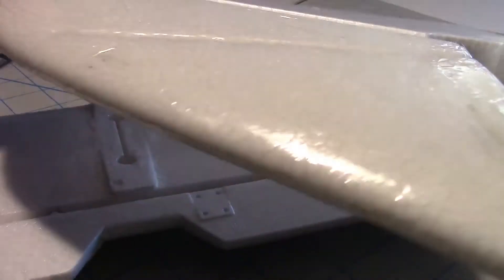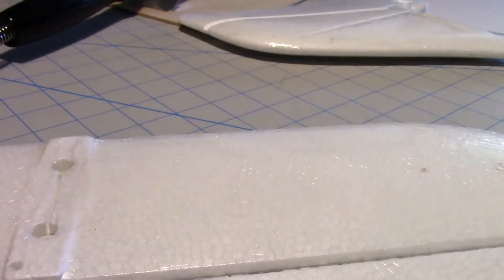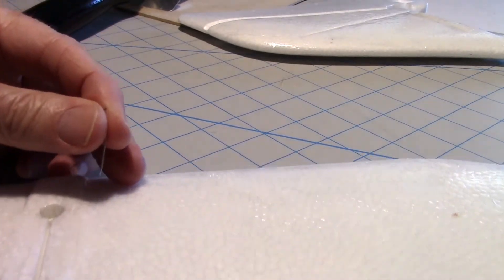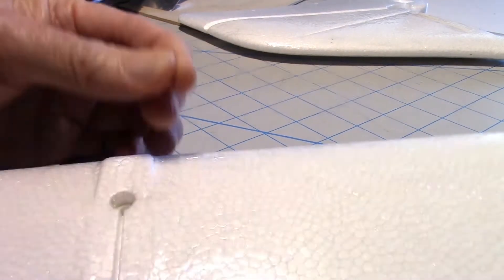Now I got the vertical stabilizer done as well. A little tip here: if you see a bubble anywhere in the lamination, you can just take a needle and pop a hole in the bubble and then iron it down.